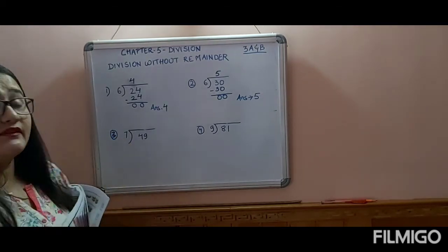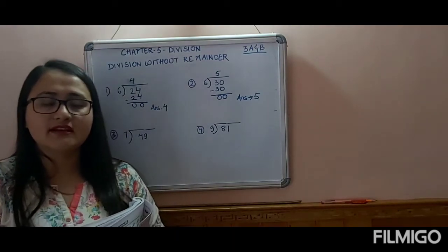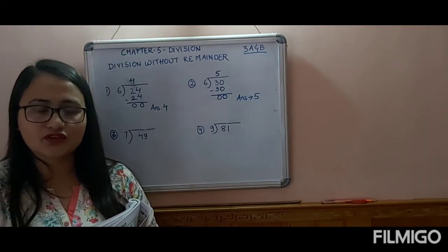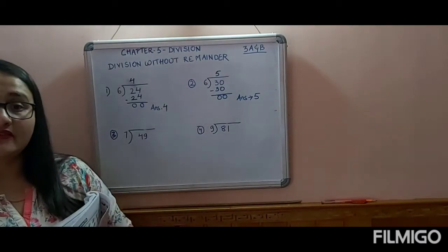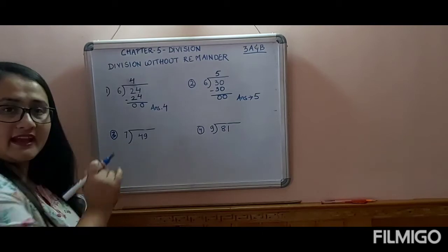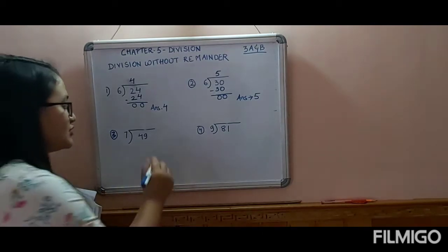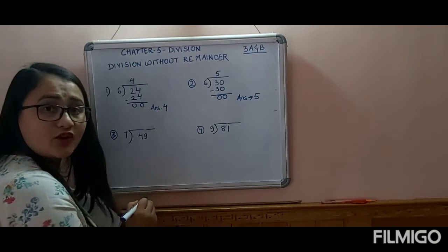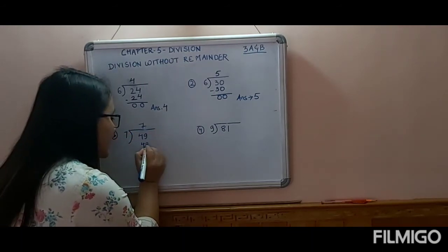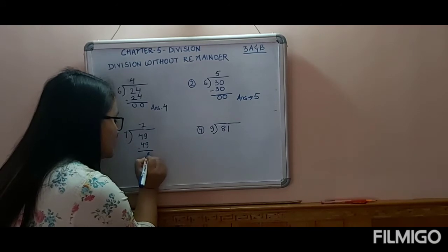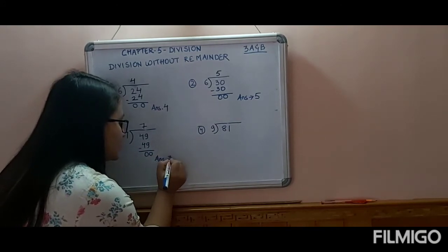Next sum: divide 49 by 7. Table of 7: 7 ones are 7, 7 twos are 14, 7 threes are 21, 7 fours are 28, 7 fives are 35, 7 sixes are 42, 7 sevens are 49. Stop there. We write 7, then minus 49 from 49, remainder is 0. Your answer is 7.